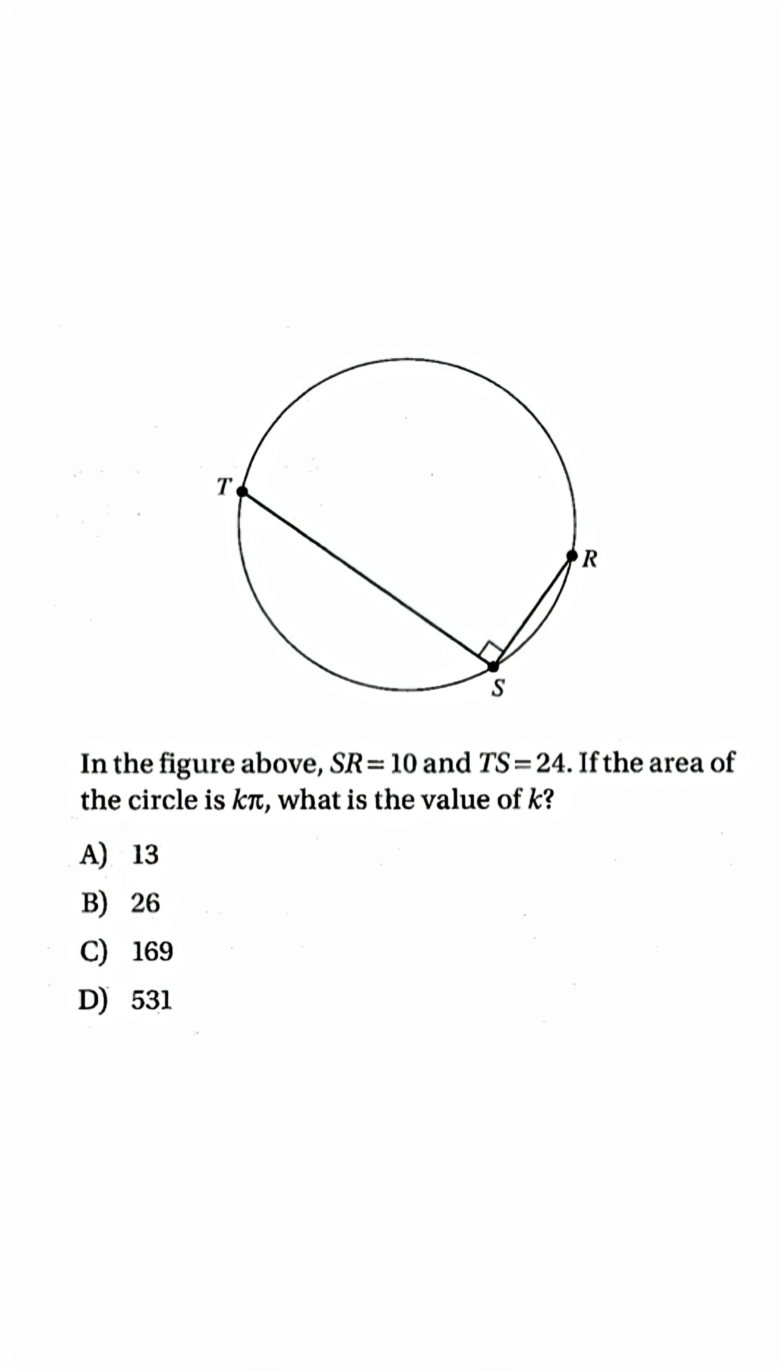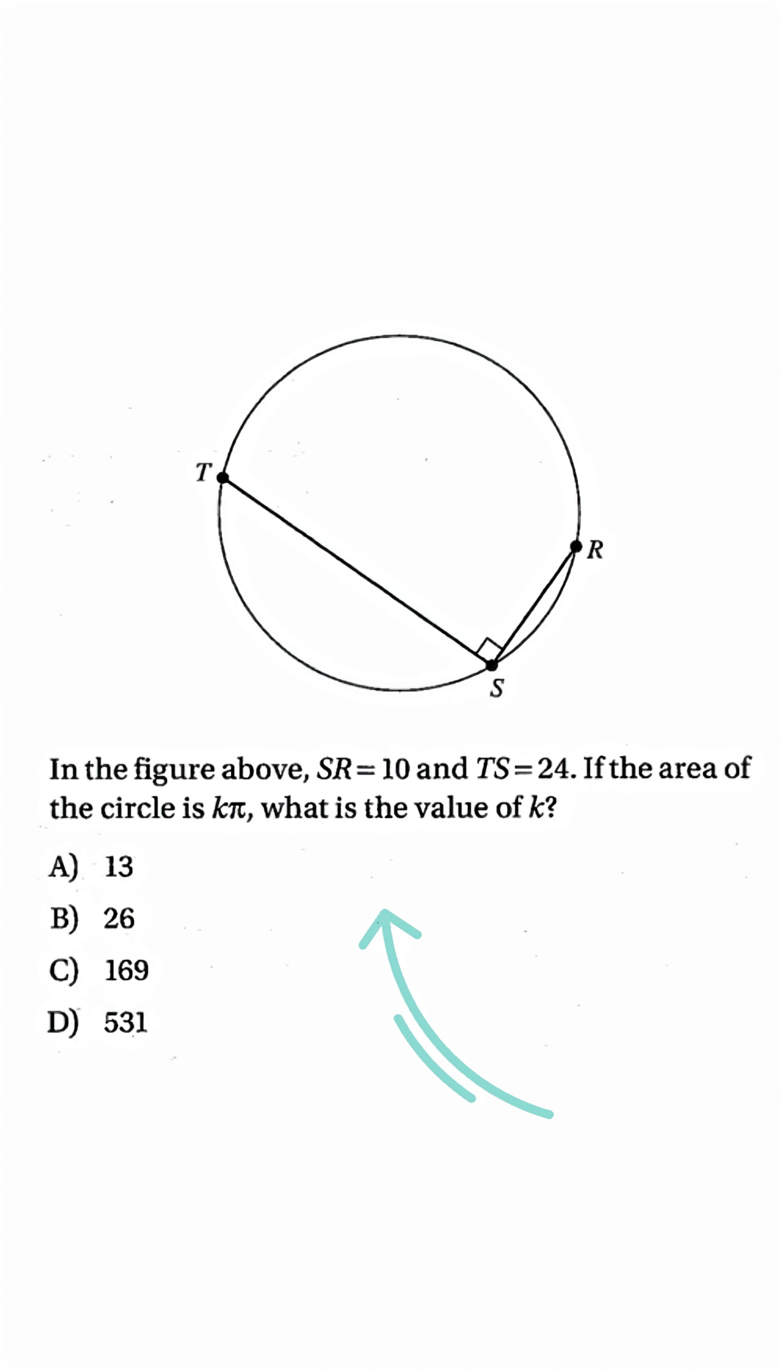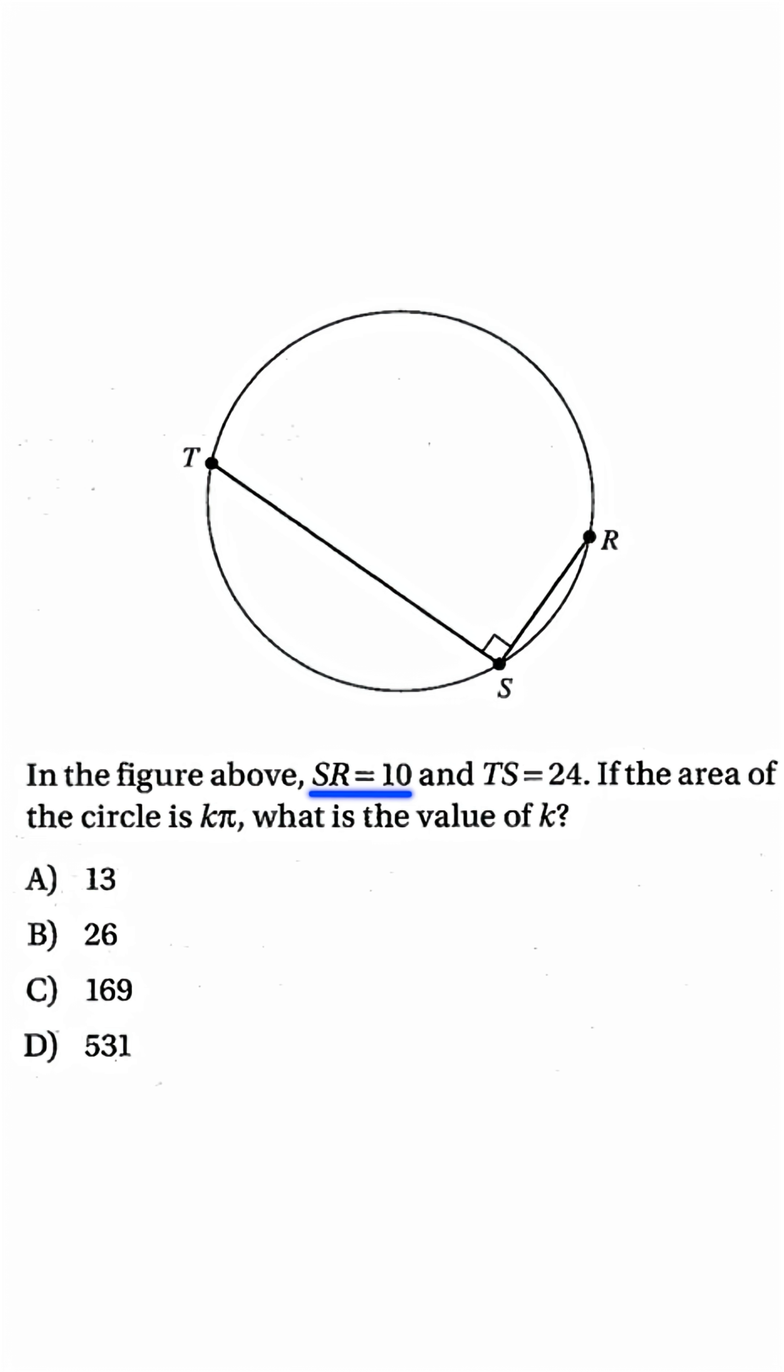This looks like a simple circle problem, until you realize what everyone misses. You're given two line segments in a circle, one's 10 units, the other's 24, and you need to solve for k.